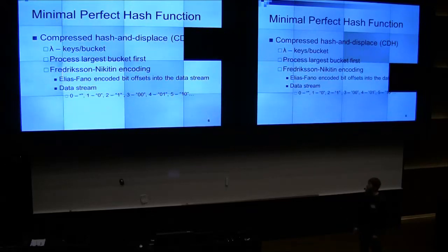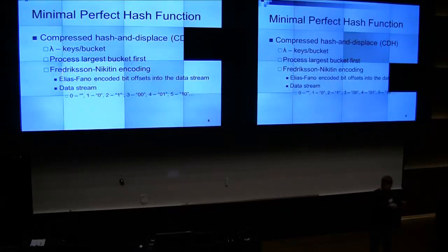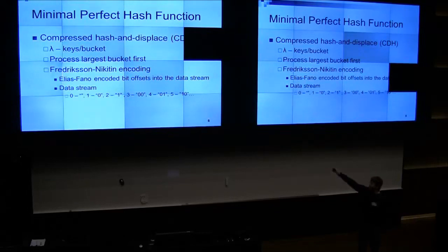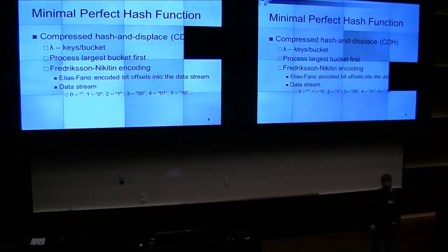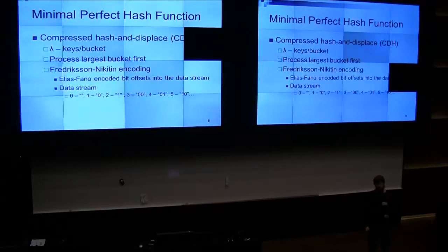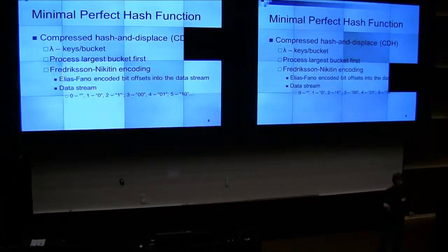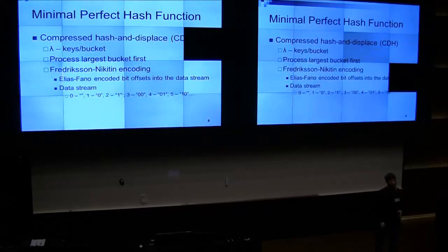Basically, it's Elias-Fano encoded bit offsets. Each bucket number is encoded: if the first hash function worked, you store nothing. If it was the first, you store a single bit of zero; if it was the second, a single bit of one. You have pointers — or offsets — into that data stream. Since they're a sorted list of numbers, you can store that as Elias-Fano, which is a very effective method.